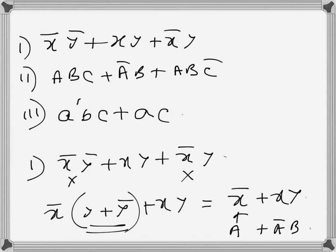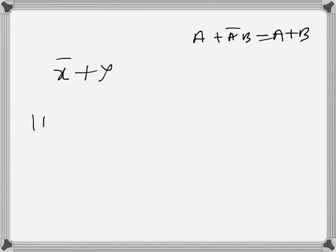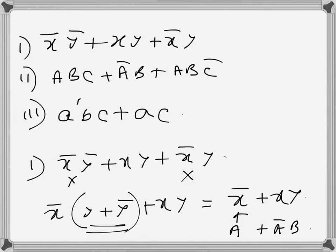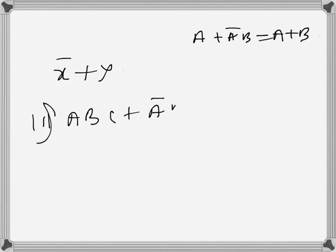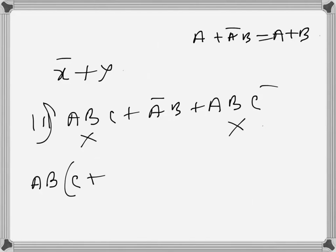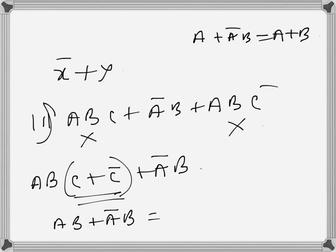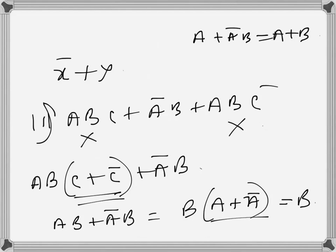For problem two, simplify a b c plus ā b plus a b c̄. From the first and third terms I can factor out a b, giving a b(c plus c̄) plus ā b. Since c plus c̄ equals one, this becomes a b plus ā b, and factoring out b gives b(a plus ā), which equals b since a plus ā is one.